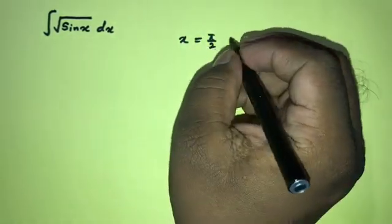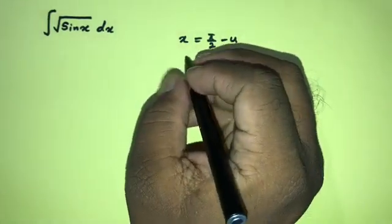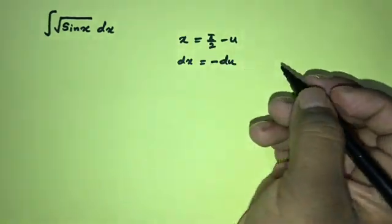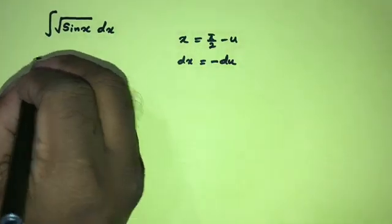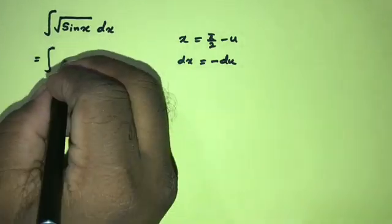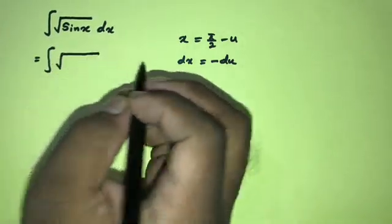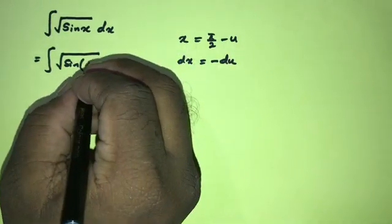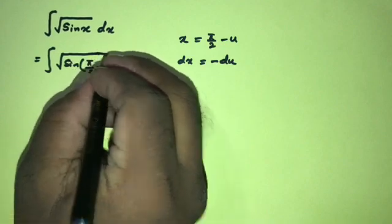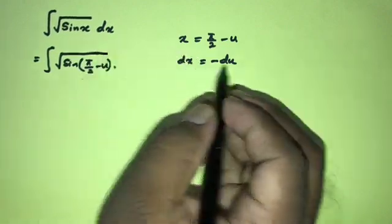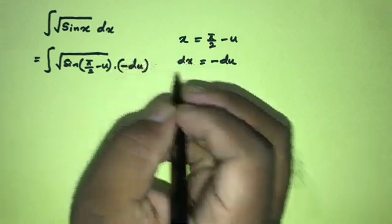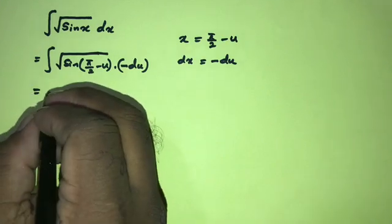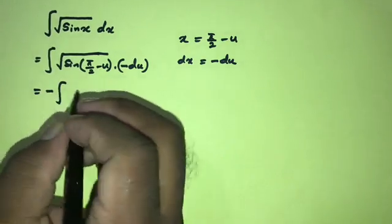Now differentiate, so dx is equal to minus du. We can plug in here: the square root of sine of x equals 5 over 2 minus u, and dx equals minus du.